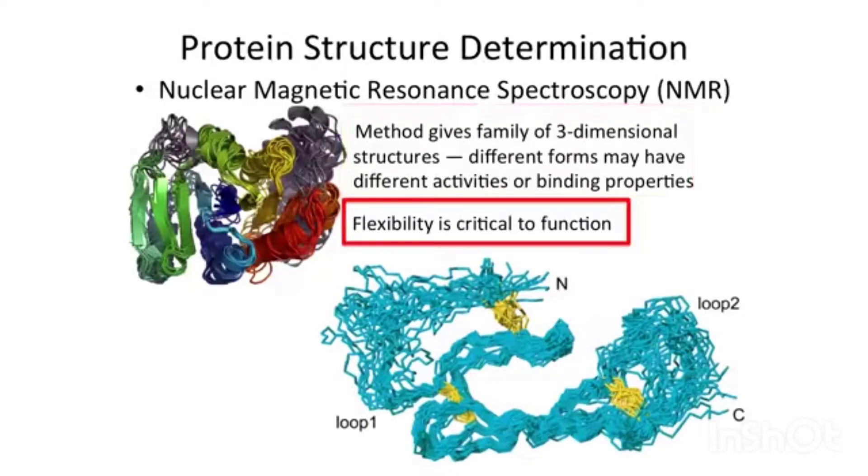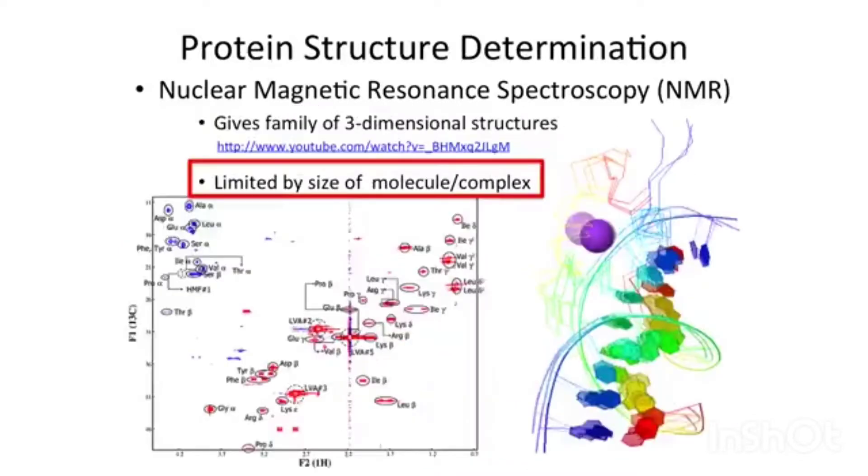Remember that flexibility is critical to function. Understanding where flexibility occurs and how it appears is really important to our ability to interpret structures in an accurate manner. This is limited by the size of the molecule complex. We're getting larger structures from NMR, but you can crystallize a very large complex, like a ribosome or multi-protein complex. If it crystallizes well, you can get its structure. If it's large, you cannot do that with NMR.